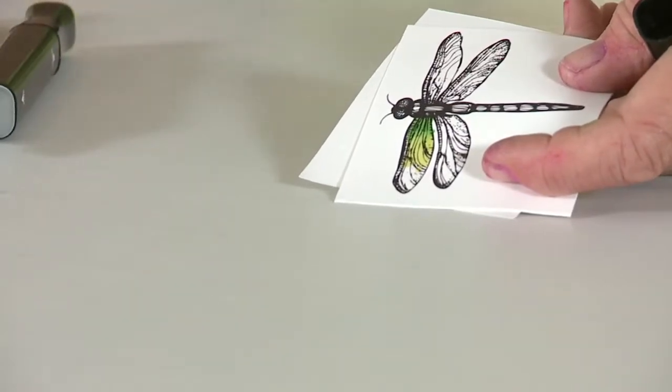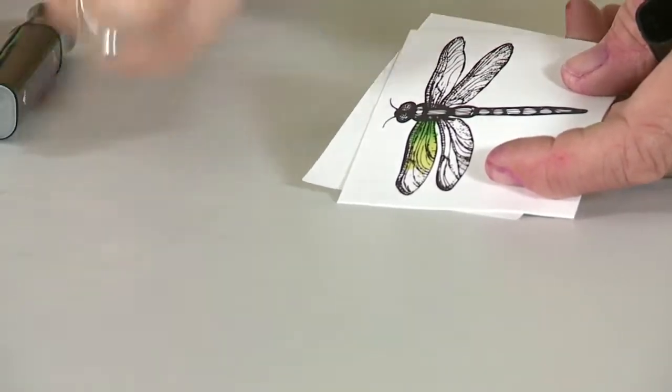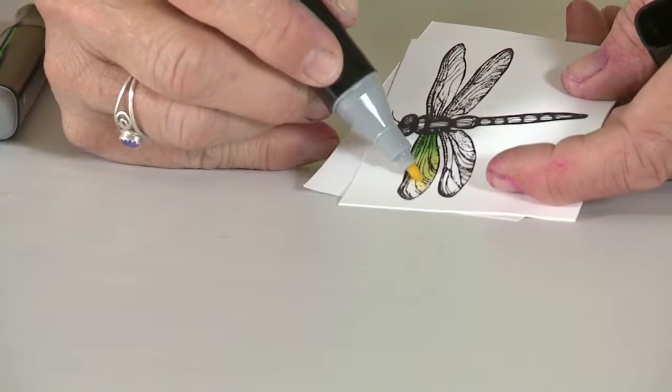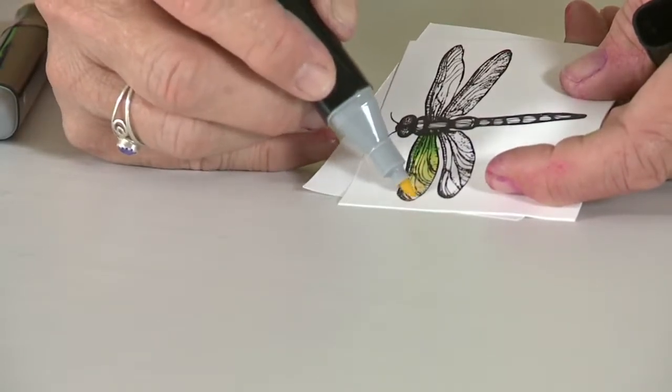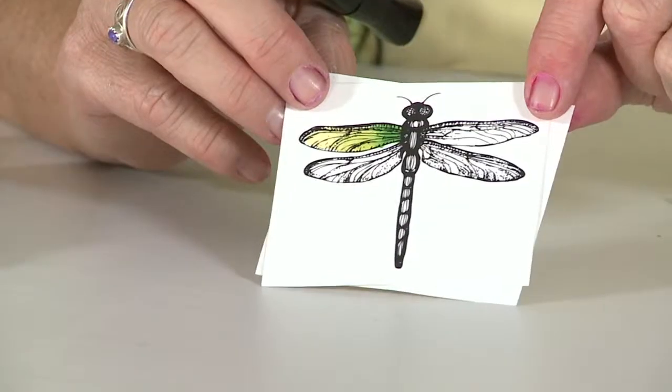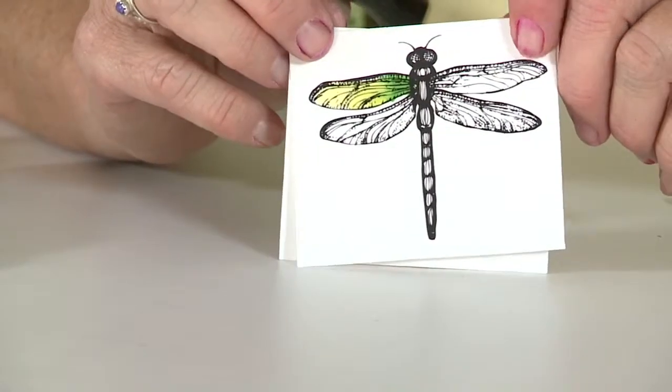And then I take my lightest color, and I do the same thing. I gently overlap the edge of the previous color while it's still wet, and pull it out to the edge, and then you have a nice smooth blend without lines between your colors. So I hope you enjoyed my tip of the day for Scrapbook Expo.